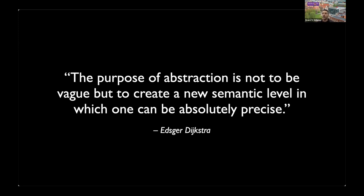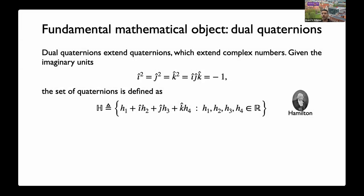We need to define a common mathematical tool. In the techniques and theories we've been developing, we use a fundamental mathematical object: the dual quaternion. Dual quaternions extend quaternions, which in turn extend complex numbers. Complex numbers have the imaginary unit i such that i squared equals minus one. Quaternions extend that idea by introducing two new imaginary units, j and k, which have the same property as i, but also interact amongst themselves: i times j times k equals minus one.